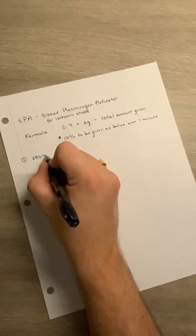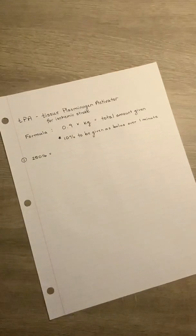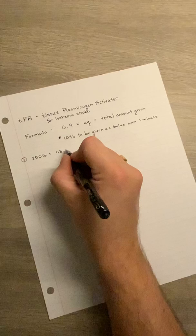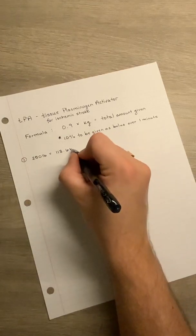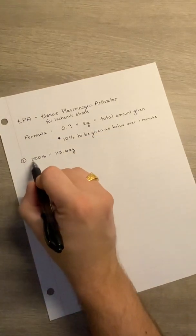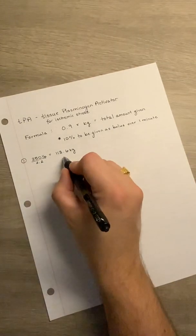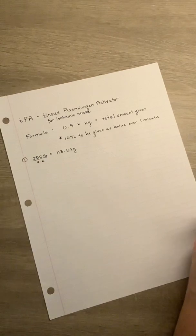250 pounds, which needs to be immediately calculated into kilograms. Once we convert into kilograms, it's 113.6 kilograms. You divide this by 2.2 for those of you who don't know. All right, so we have our patient weight of 113.6 kilograms.